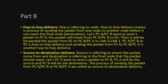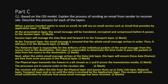Part C is worth 10 marks. Question 1 asks: based on the OSI model, explain the process of sending an email from sender to receiver, describing the process for each layer. The OSI model has seven layers. Read carefully — it says 'sending' an email, so you start from the Application Layer. If you explain receiving instead, there is no mark.